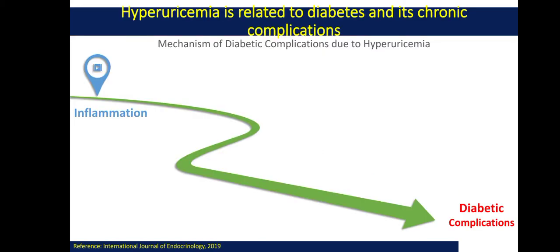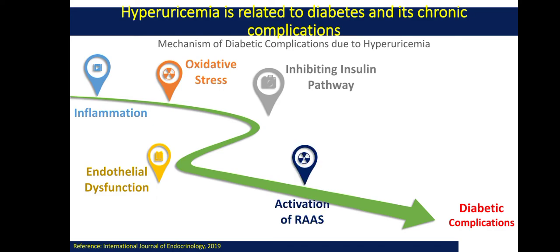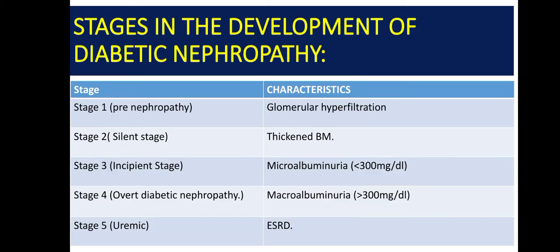Now, how can hyperuricemia cause diabetic complications? As we know, it can lead to inflammation, which is followed by oxidative stress, then endothelial dysfunction. This will inhibit the endothelin pathway. When there is less perfusion to the kidney, there will be activation of the renin-angiotensin-aldosterone system, and there will be thrombosis and platelet aggregation that lead to diabetic complications and diabetic nephropathy.